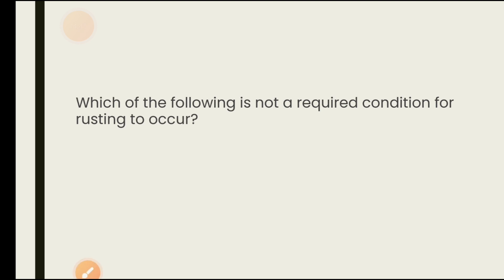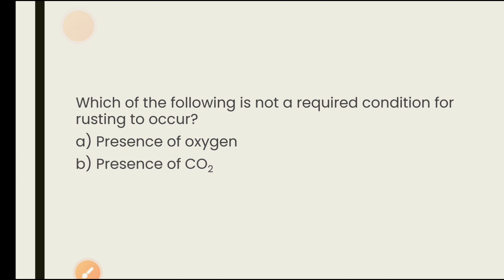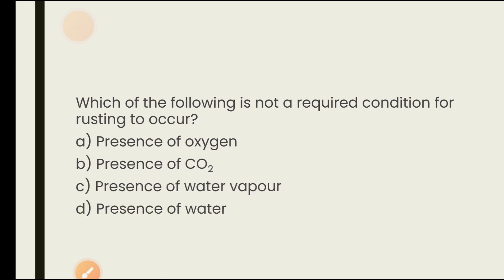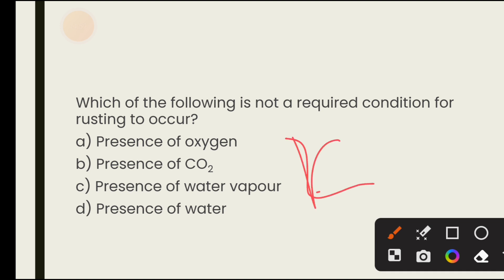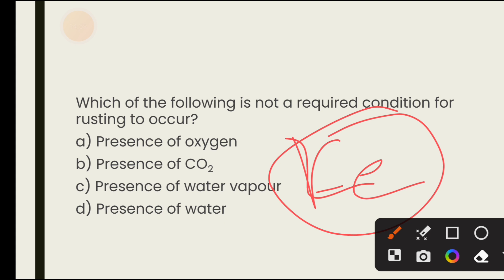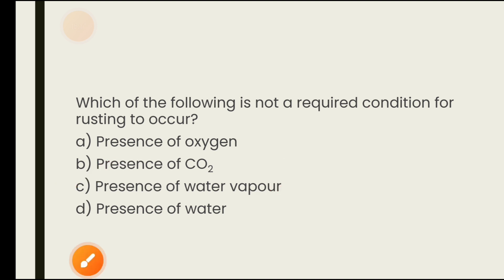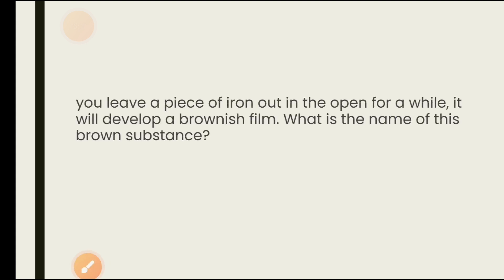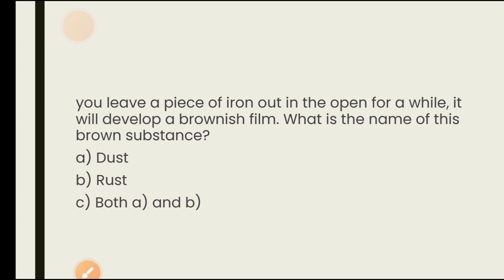Which of the following is not a required condition for rusting to occur? Options are presence of oxygen, presence of carbon dioxide, presence of water vapor, presence of water. For rusting, the required conditions are oxygen and water vapor or moisture. Carbon dioxide is not a required condition for rusting. The brownish film that forms on iron is called rust.